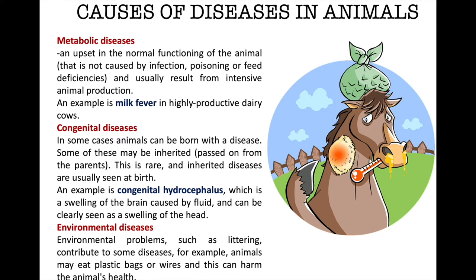Other causes include metabolic diseases — an upset in the normal functioning of the animal that is not caused by infection, poisoning, or feed deficiencies, and usually results from intensive animal production. An example would be milk fever in highly productive dairy cows. Another cause is congenital diseases; in some cases animals can be born with a disease, which is why it's called congenital. Some of these may be inherited or passed on from the parents. An example would be congenital hydrocephalus, which is a swelling of the brain caused by fluid and can be clearly seen as a swelling of the head.